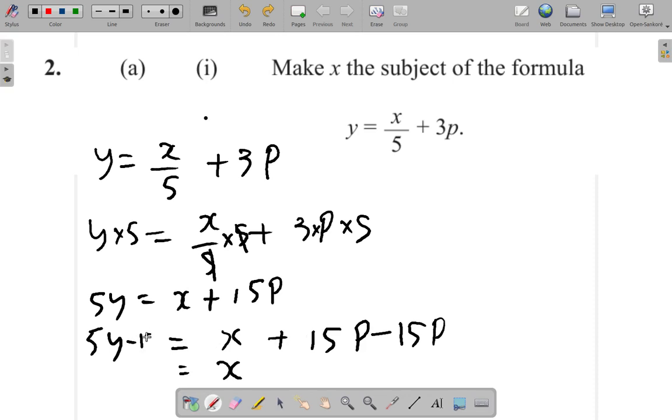So minus 15p. So I have 5y minus 15p. So here, what I have is x equals 5y minus 15p.